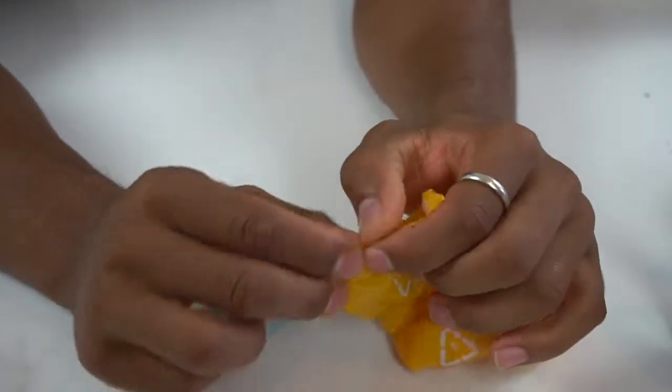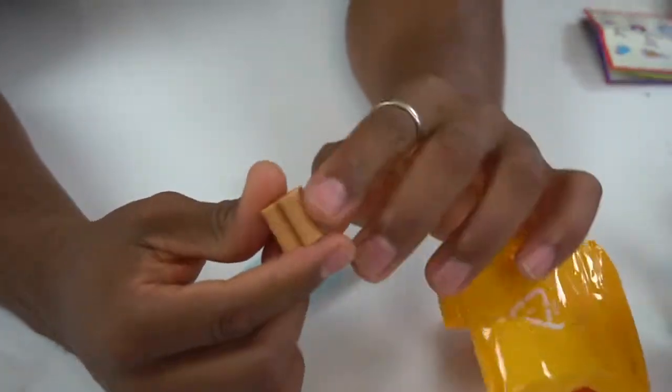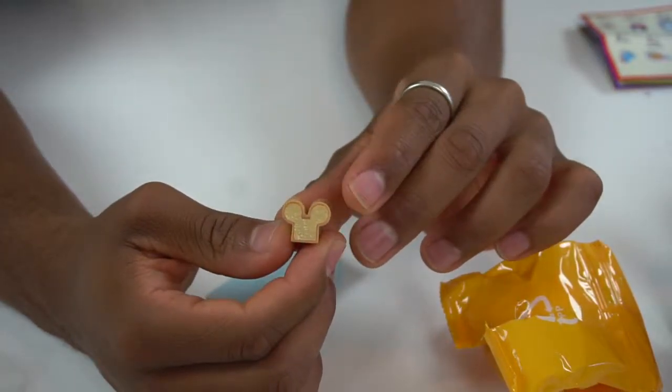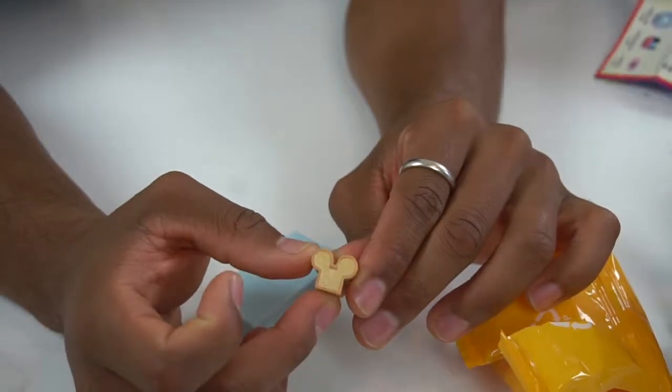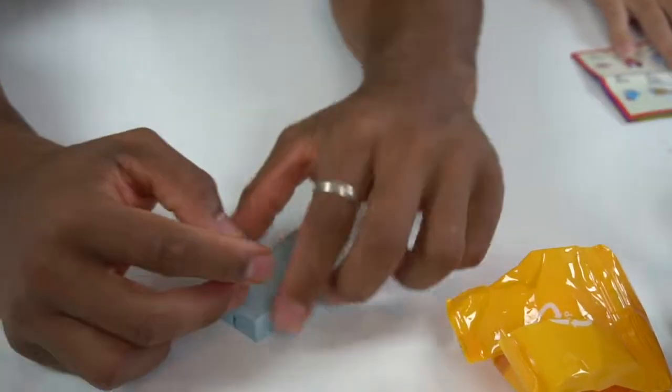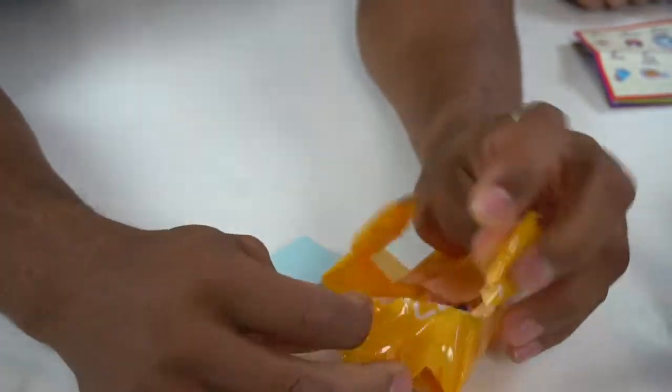We'll open this one up first, and we have some Mickey toast, a loaf of bread. That is number 31, Mickey head loaf of bread. So Minnie has something to eat. Next up on the other side we have...